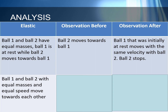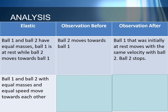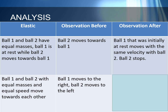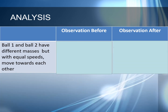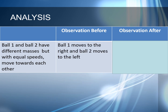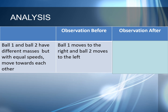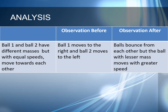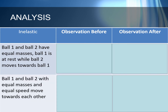Let us proceed to setup 2. Ball 1 and ball 2 with equal masses and equal speed move towards each other. Before collision, ball 1 moves to the right while ball 2 moves to the left. After collision, the two balls bounce from each other with the same speed in the opposite direction. For setup 3, ball 1 and ball 2 have different masses but with equal speeds moving towards each other. Before collision, ball 1 moves to the right and ball 2 moves to the left. After collision, the balls bounce from each other but the ball with lesser mass moves with greater speed.